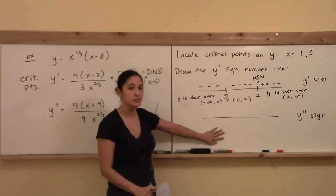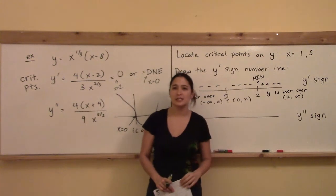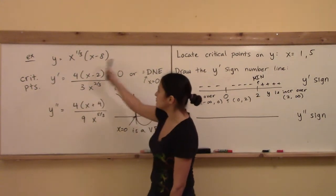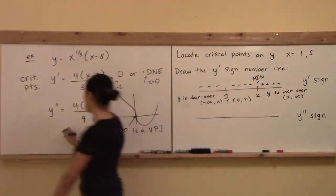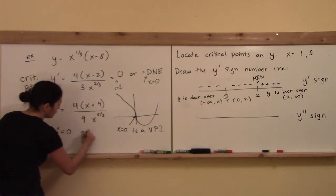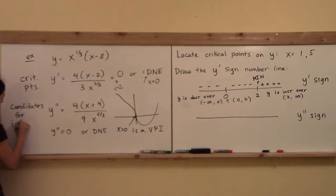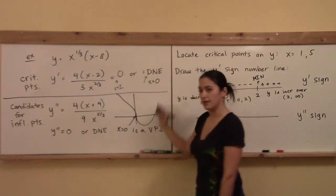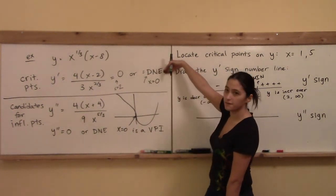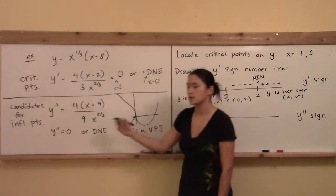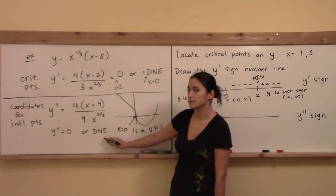Now that you know about concavity and the second derivative, you need to use the y'' sign number line to decide whether you have actual points of inflection. Solving y' = 0 or DNE gives you critical points. Solving y'' = 0 or DNE gives you candidates for inflection points — two separate issues.